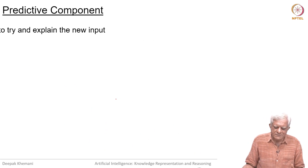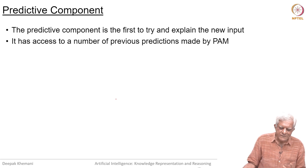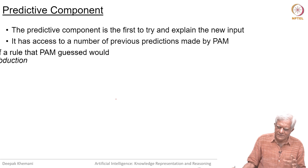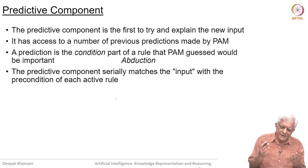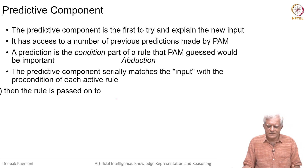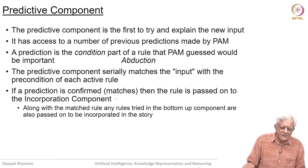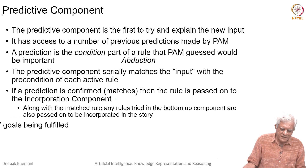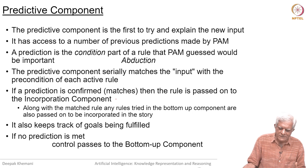The predictive component is the first to try and explain the new input. It has access to a number of previous predictions made by PAM — some come from themes like hunger drive or maintaining health. A prediction is a condition part of a rule that PAM guessed would be important; it is doing abduction here. It does not have to be necessarily true, but it could possibly be true. The predictive component serially matches the input with the precondition of each active rule.